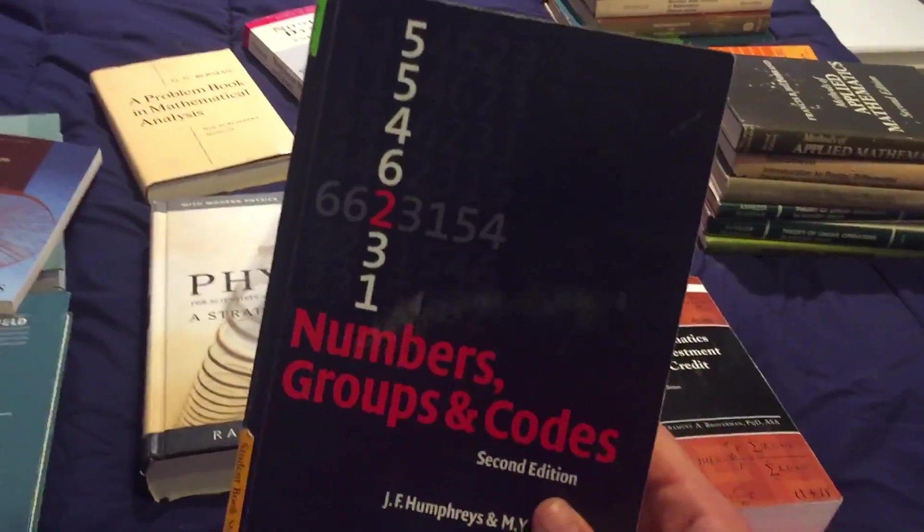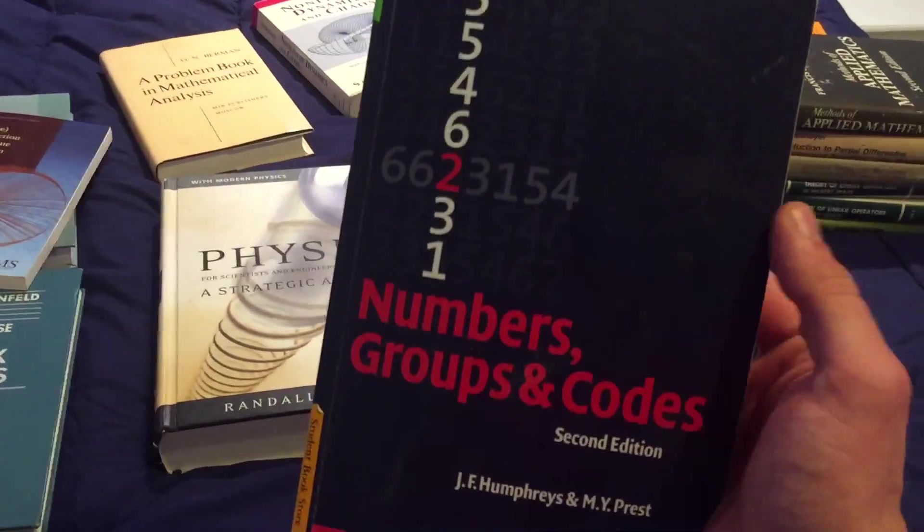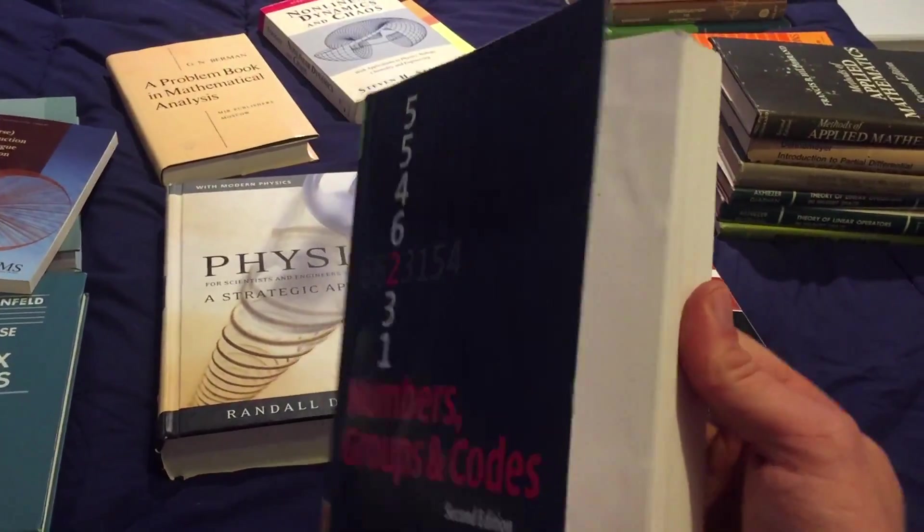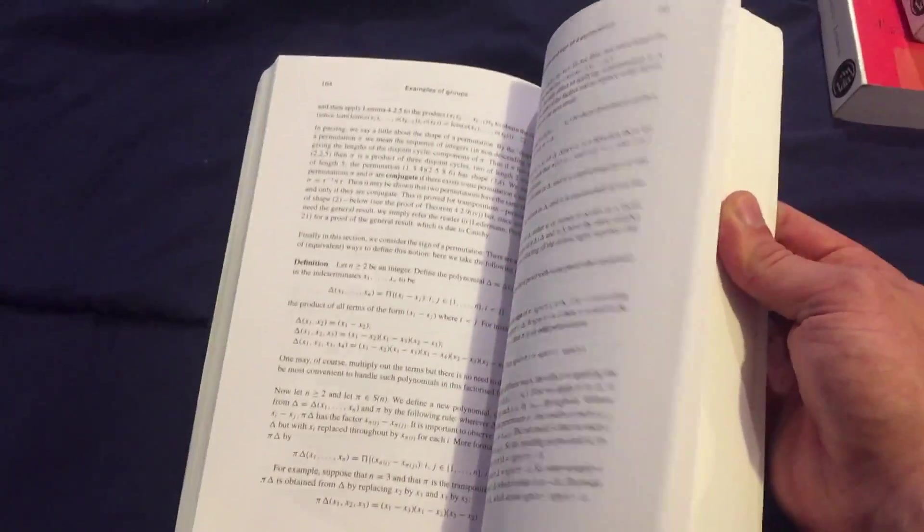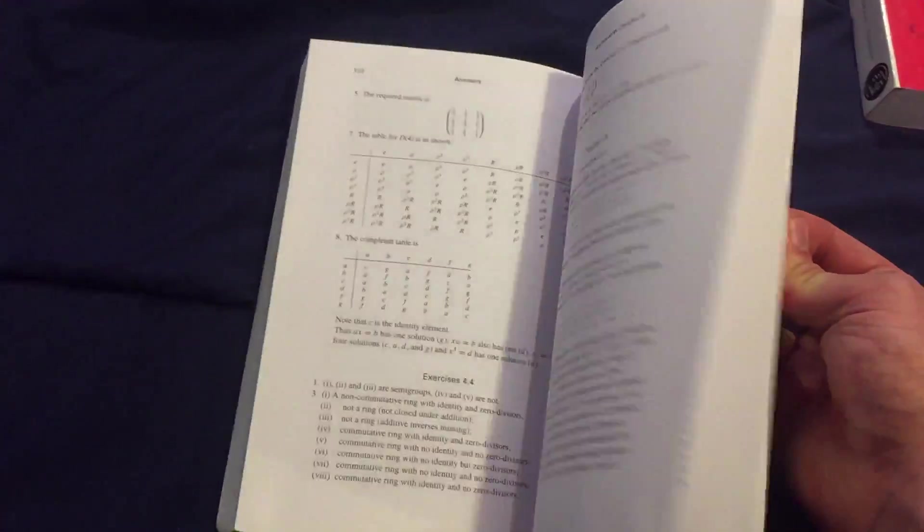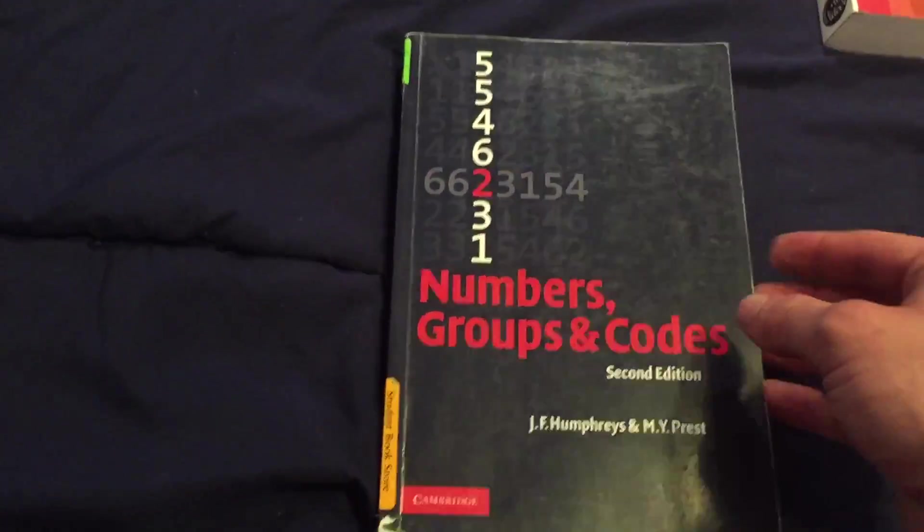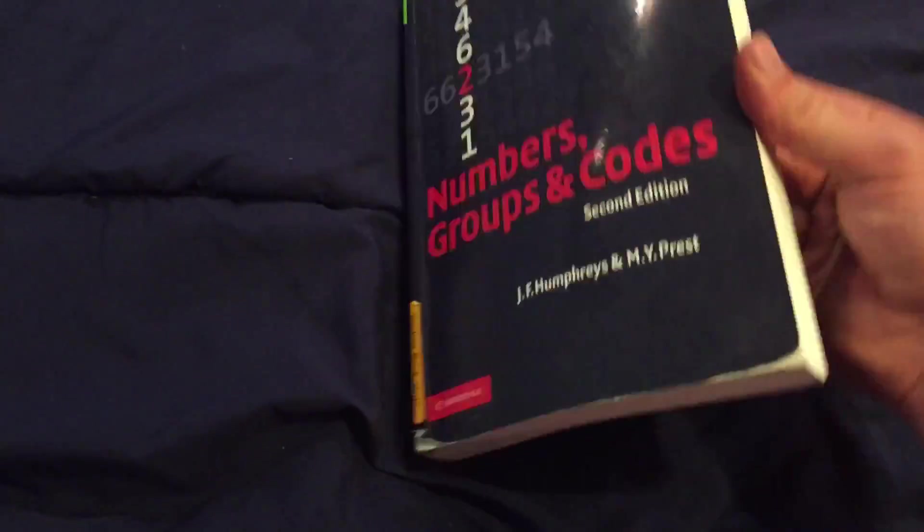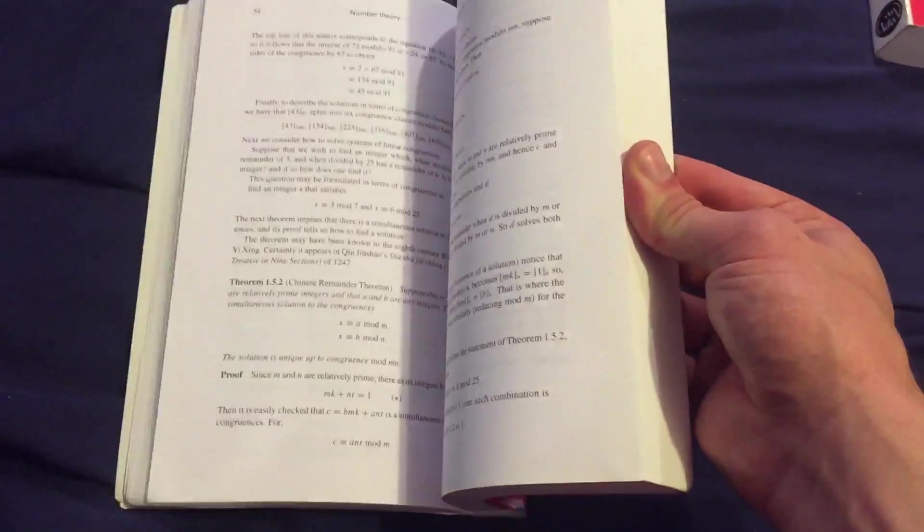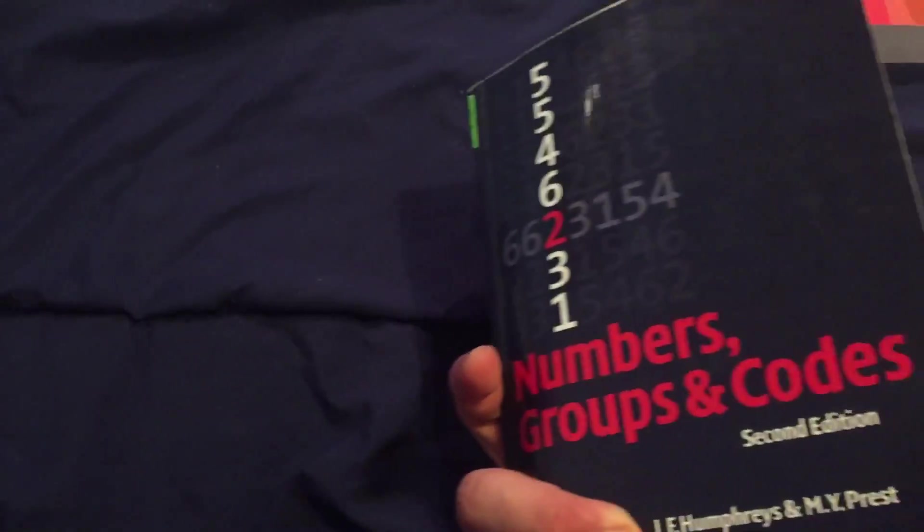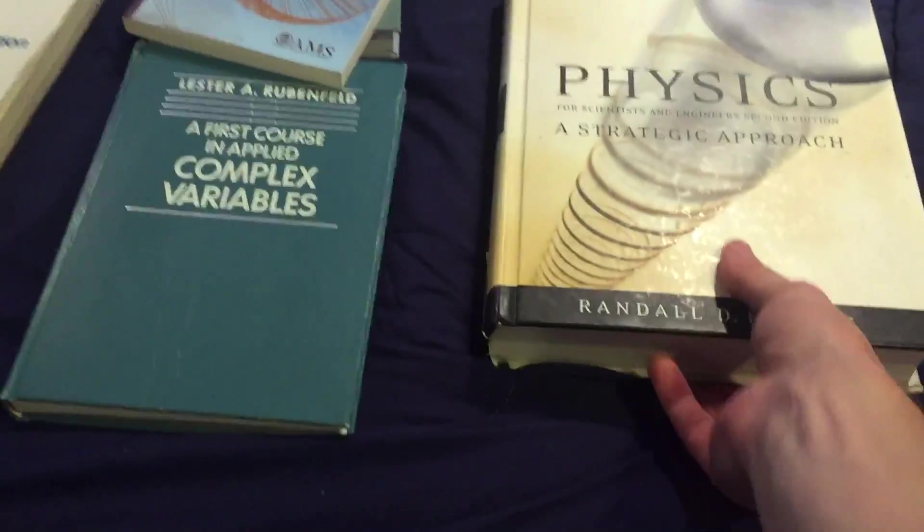Another class I took was a discrete math class. This book says it's Numbers, Groups, and Codes, so it was kind of like a mixture of a bunch of things. I didn't read too much of this book, but if you're into discrete math like number theory, coding, that sort of thing, like intro to abstract algebra, I guess this book's pretty good. I didn't really read all that much of it. I think I got most of my information from the class itself. I used this book in college one time. I think I had to do a couple problems out of it.